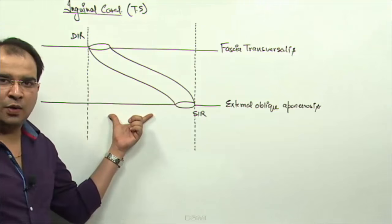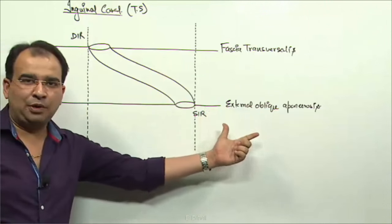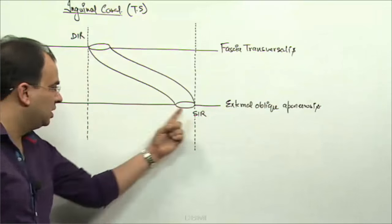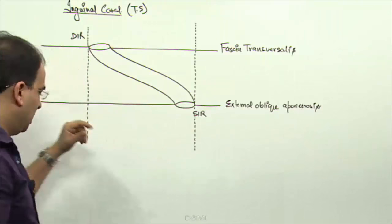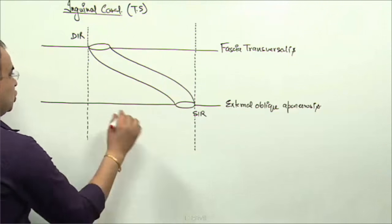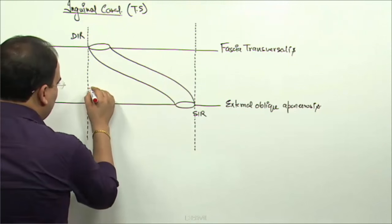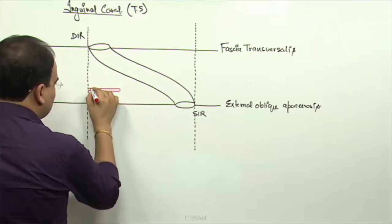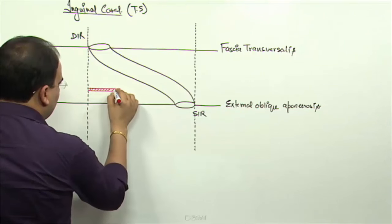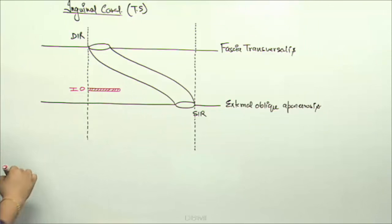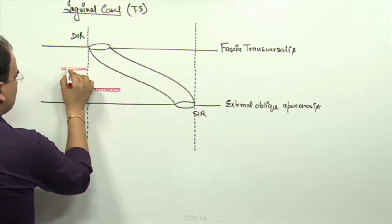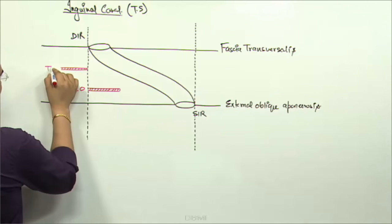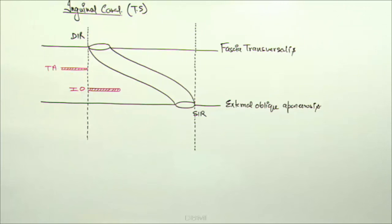When you look at the anterior wall of the inguinal canal, it is made up of external oblique aponeurosis in the entire extent. The anterior wall toward the lateral side is also made up of internal oblique muscle. However, the transverse abdominus muscle is not forming the anterior wall.